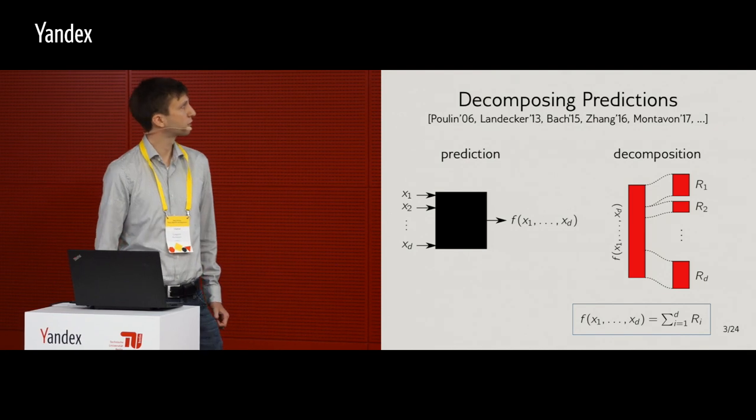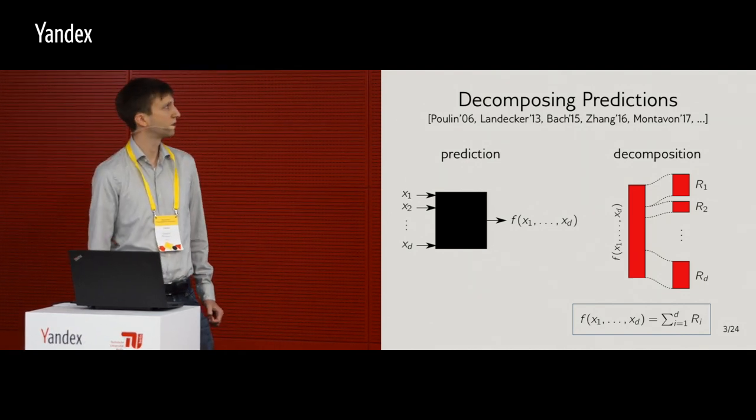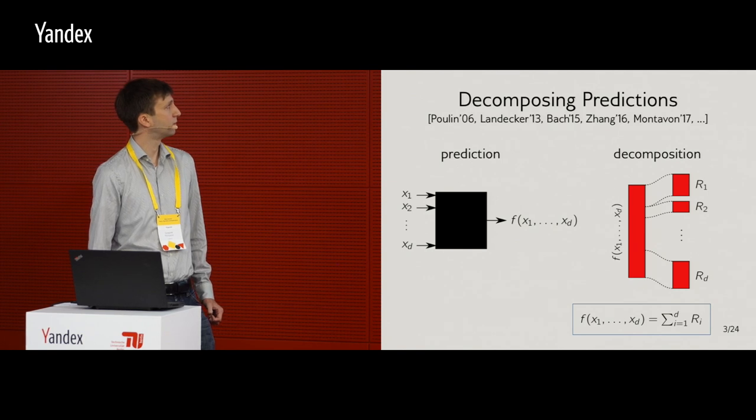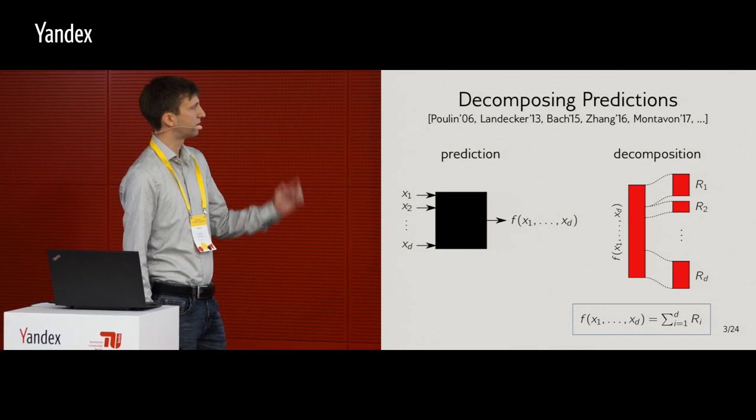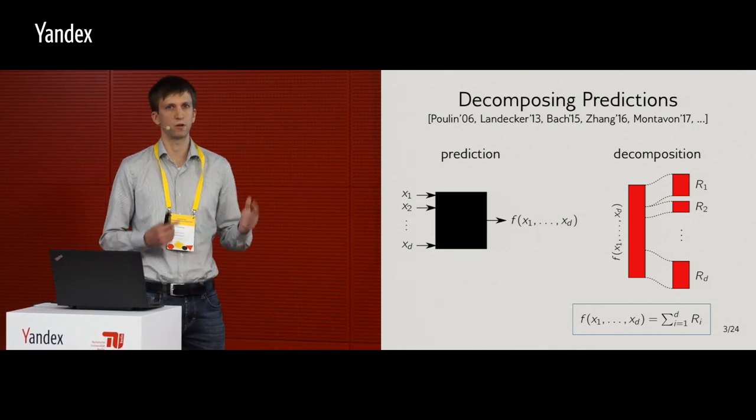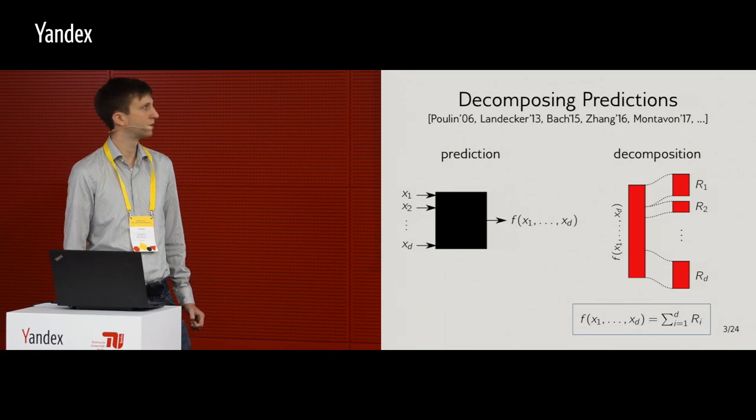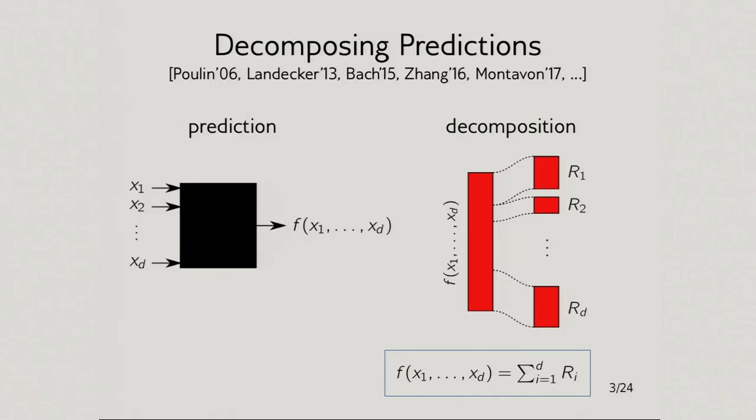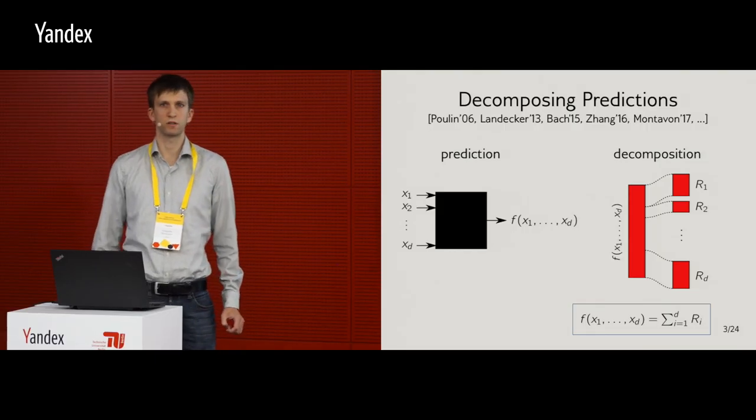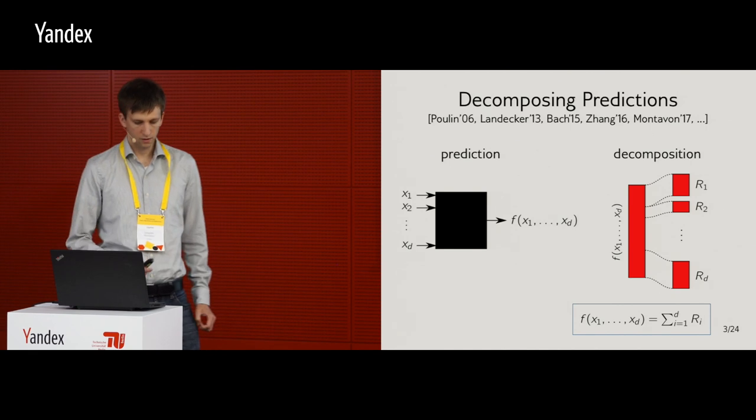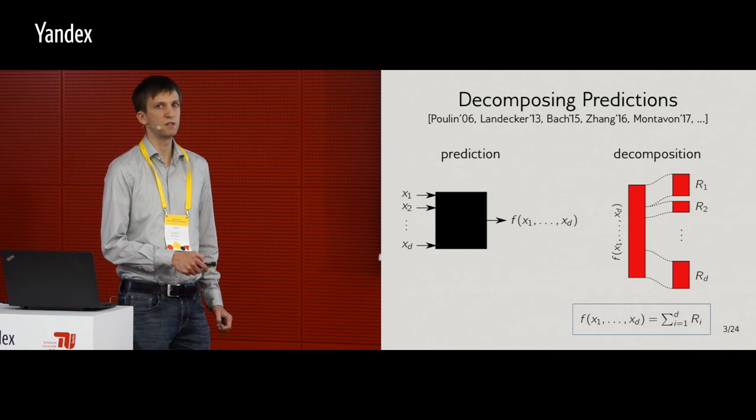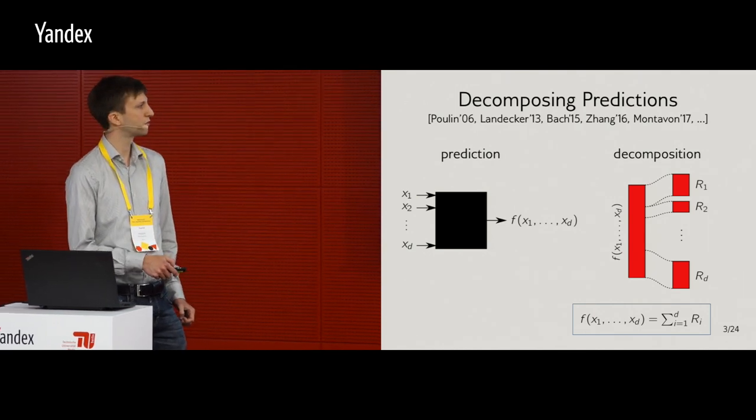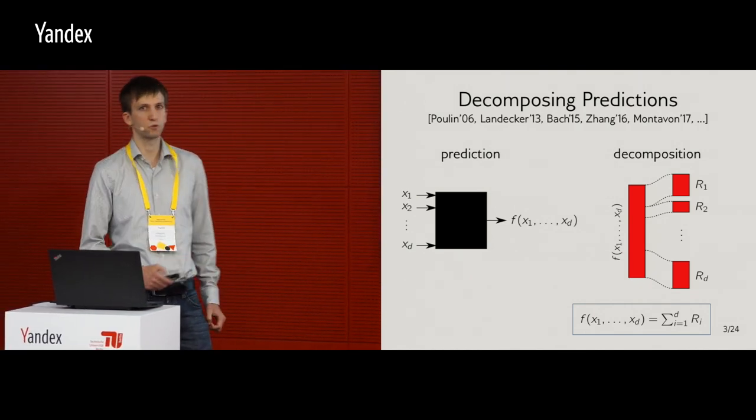So we are really focusing in this talk on the problem of decomposing predictions. So you have a prediction function, which is a multivariate function. And then you get a value, which basically gives the amount of evidence for a given class. And then you would like to decompose this value as a sum of relevance scores that tell you what is the importance of every input variable. And so you have an important property, which is called Relevance Conservation, which basically guarantees that the sum of all the relevance scores correspond to the prediction.